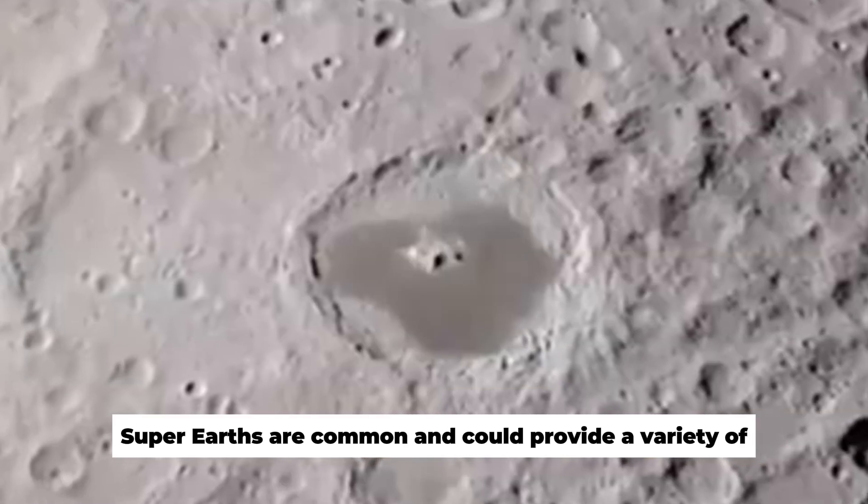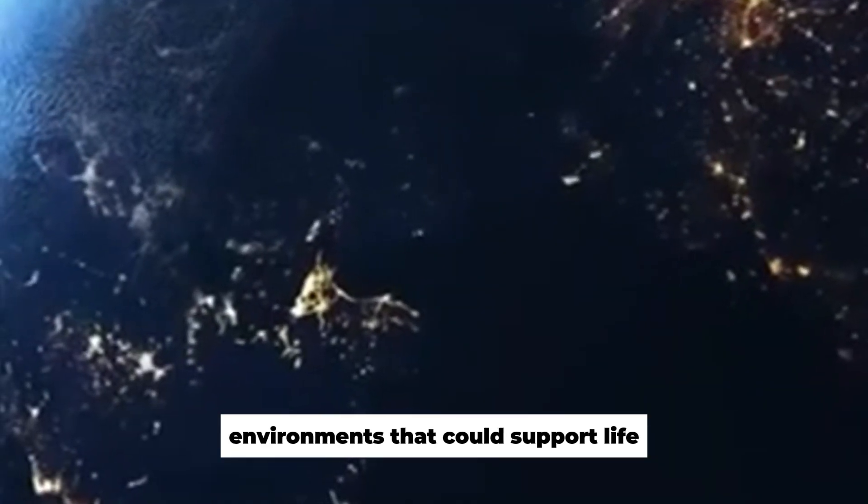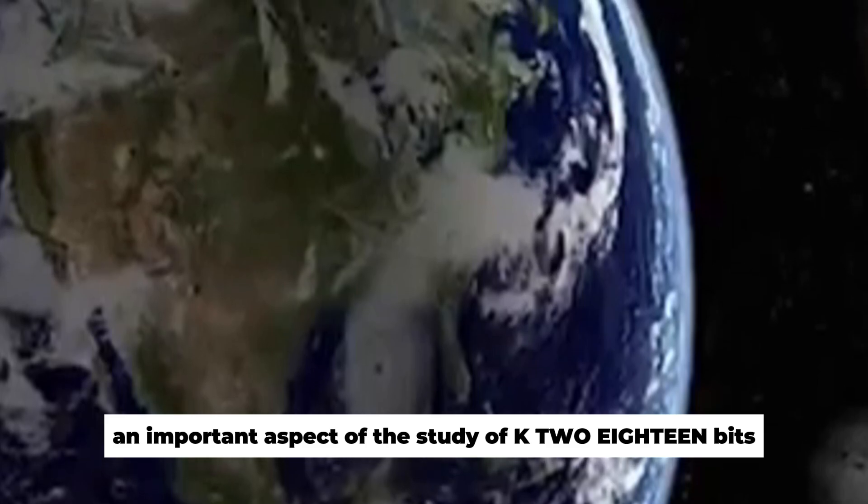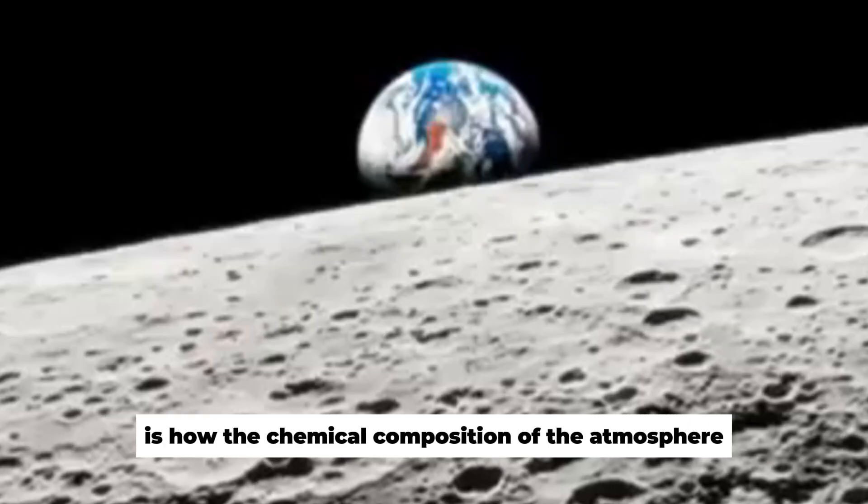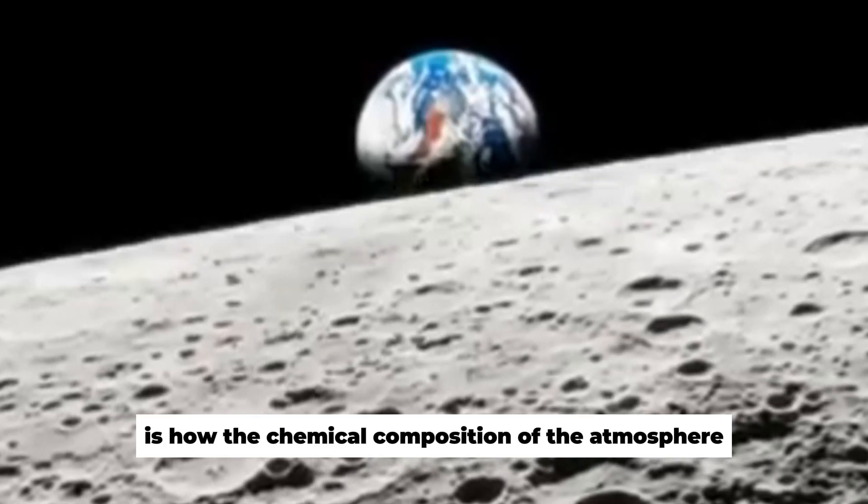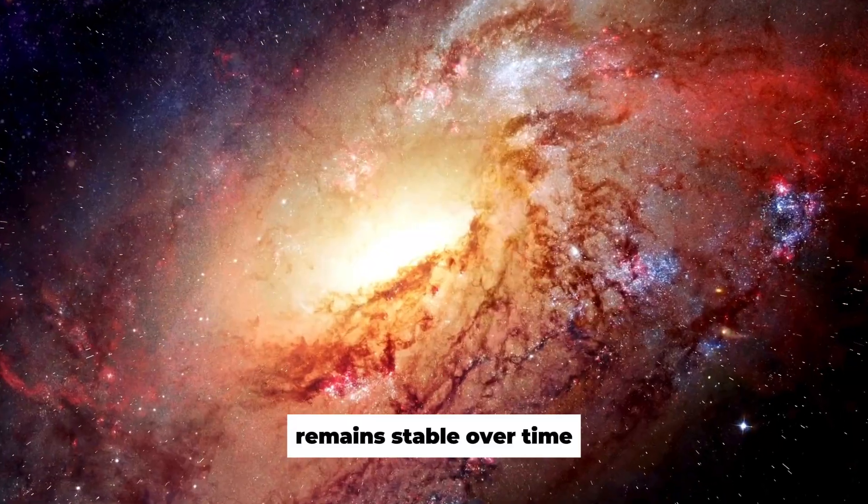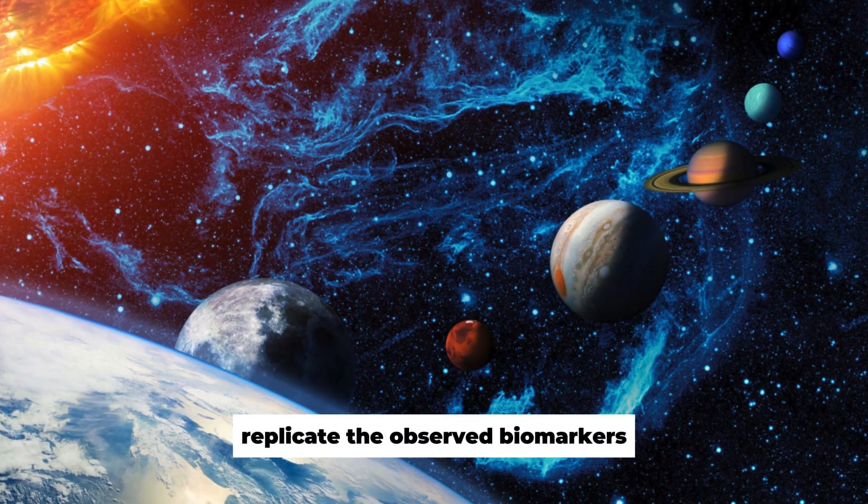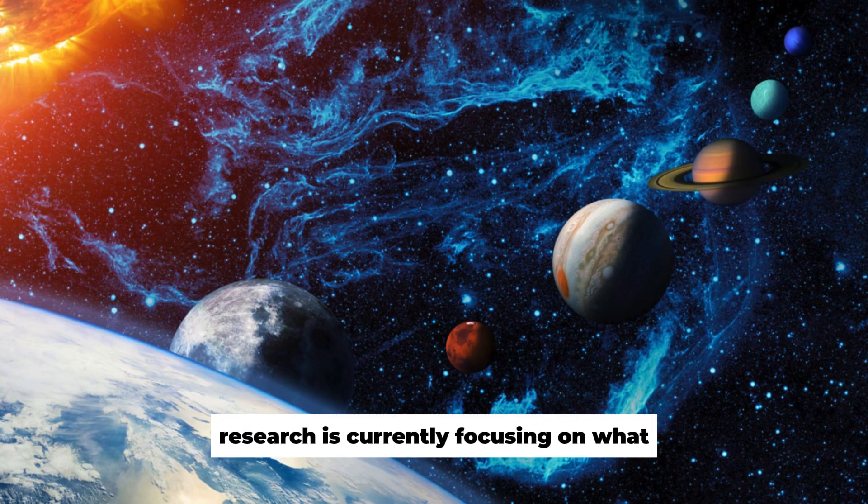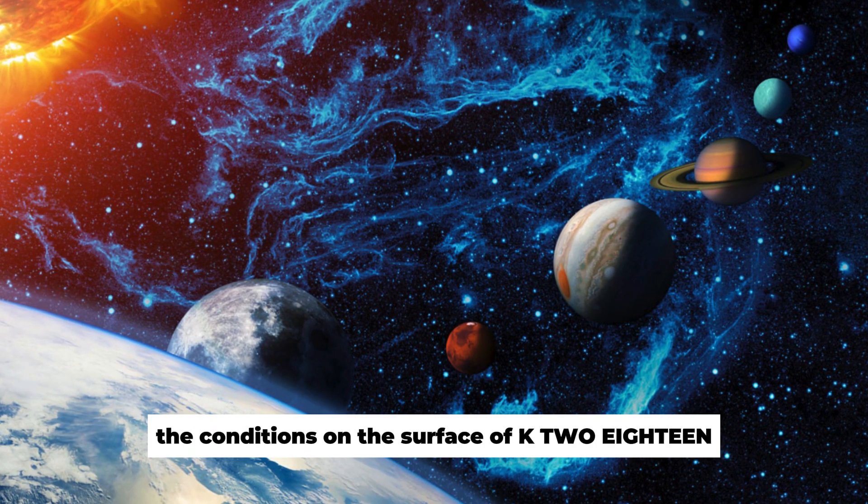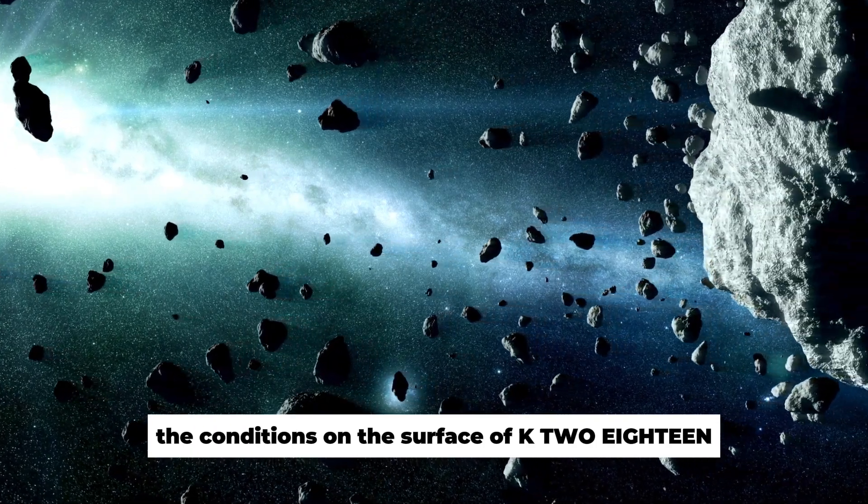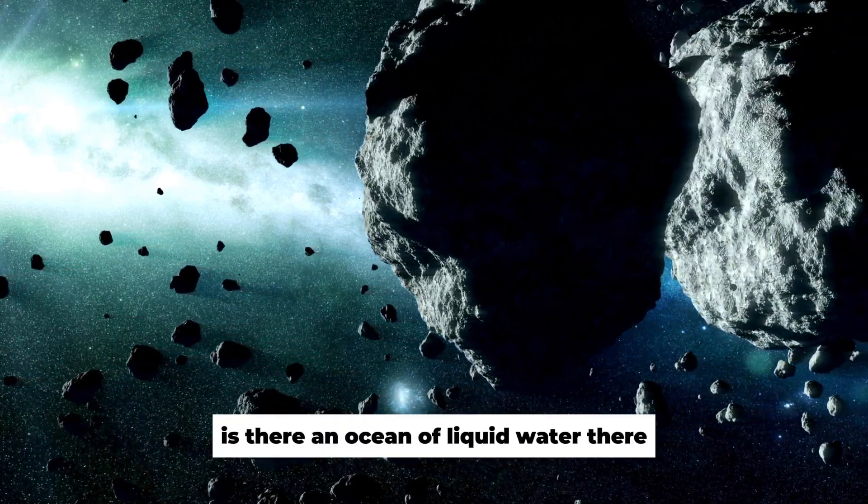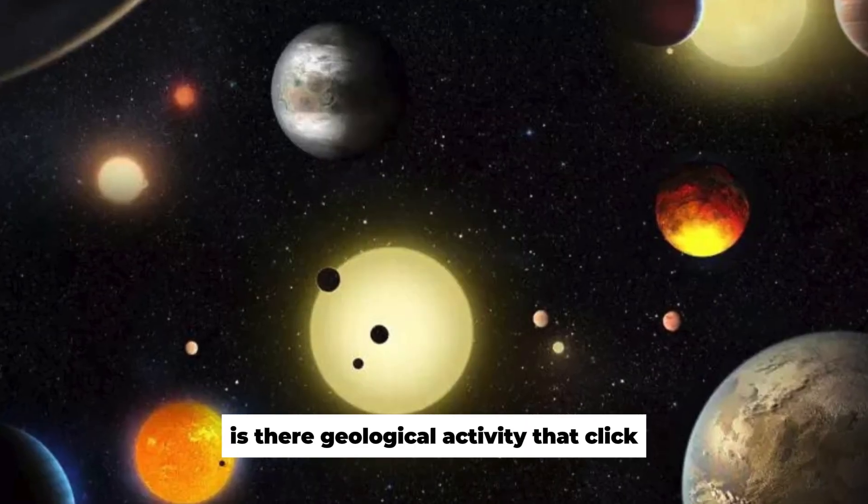Super-Earths are common and could provide a variety of environments that could support life. An important aspect of the study of K2-18b is how the chemical composition of the atmosphere remains stable over time and whether there are mechanisms that continuously replicate the observed biomarkers. Research is currently focusing on what the conditions on the surface of K2-18b might look like. Is there an ocean of liquid water there? Is there geological activity there?